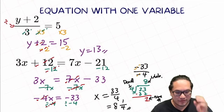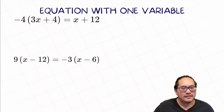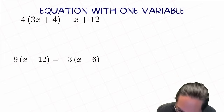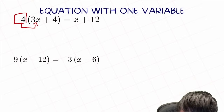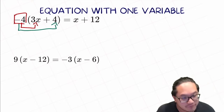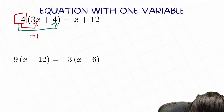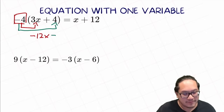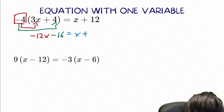Let's do more practice to reinforce this concept. Next: negative 4 times the quantity (3x plus 4) equal to x plus 12. Using the distribution method, we multiply negative 4 with everything inside the parentheses — the 3x and the 4. Negative 4 times 3x equals negative 12x. Negative 4 times 4: a negative times a positive equals a negative, so that's negative 16. This equals x plus 12.